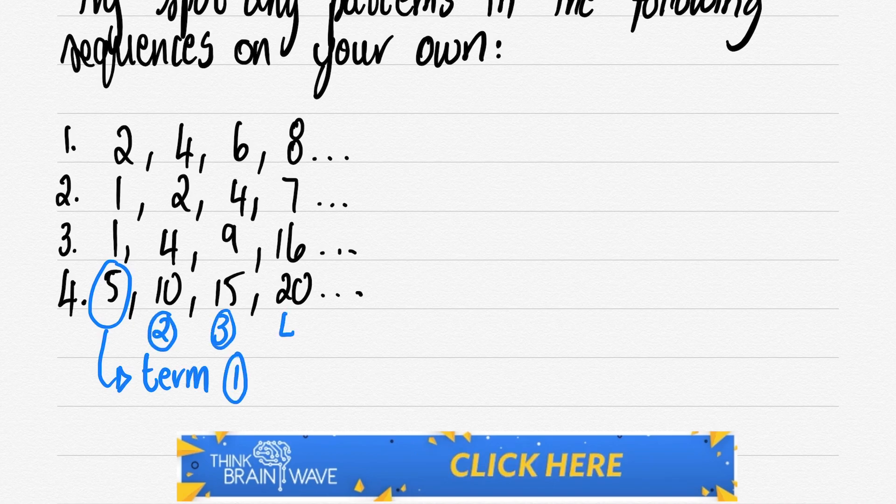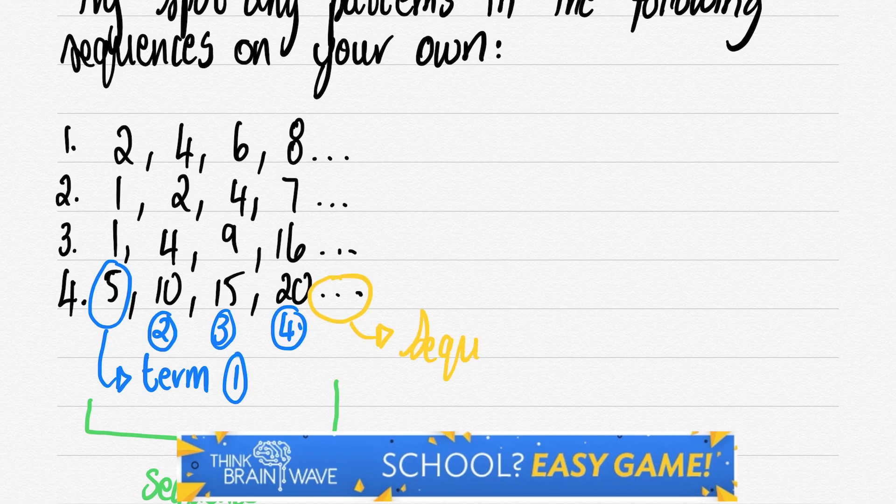So we look at the numbers there. These are all terms and we call that a sequence. The three dots means the sequence continues forever.